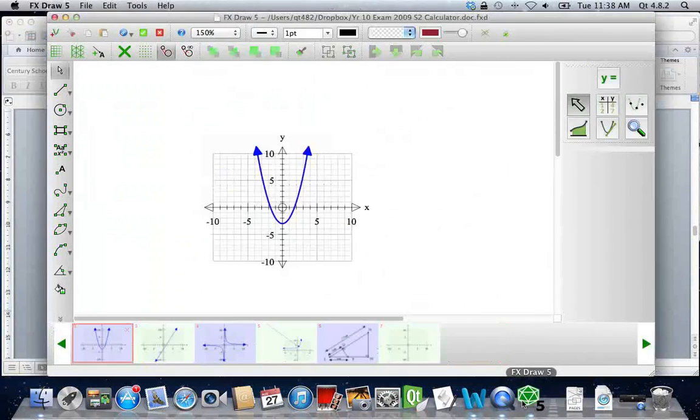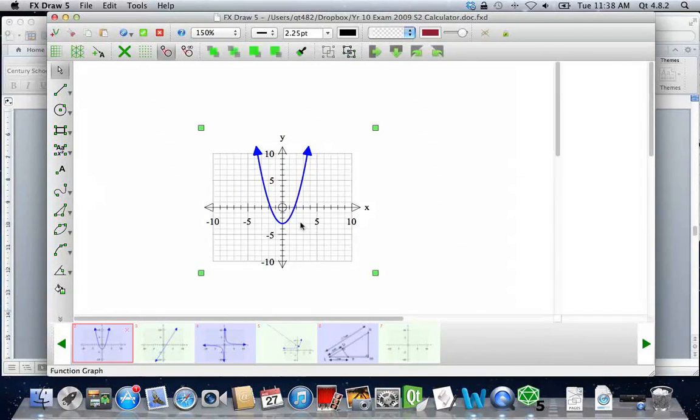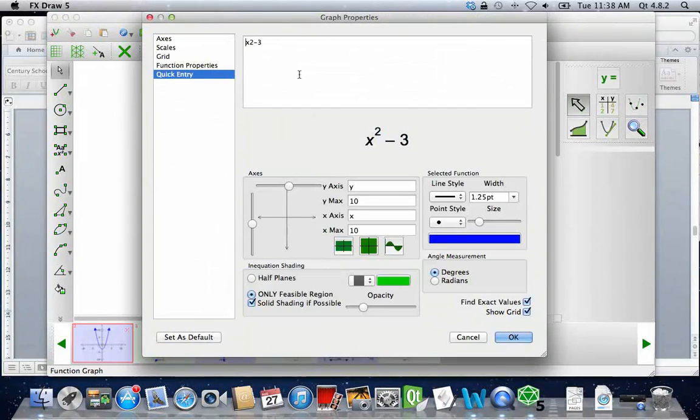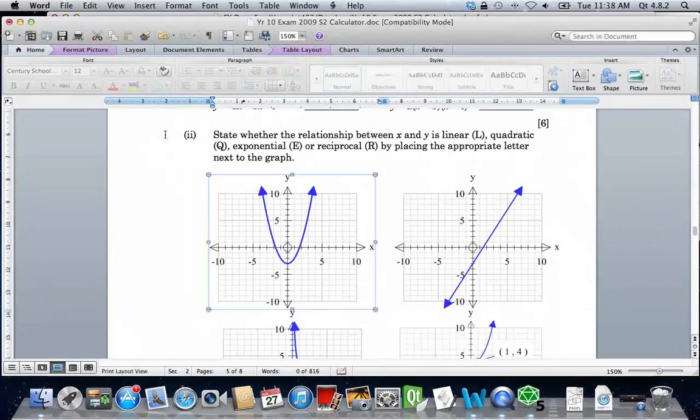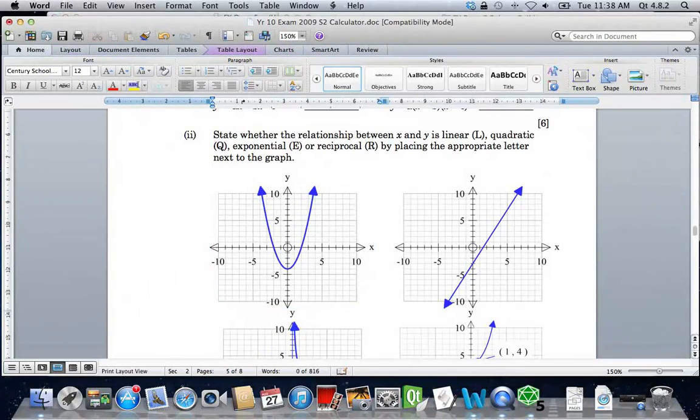And change to FXDraw 5, which searches the diagrams and finds the appropriate one. So I can go and make the change I need to. Green tick, and the graphics updated in Word.